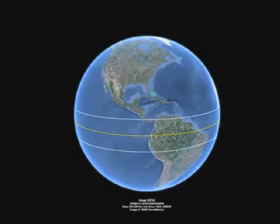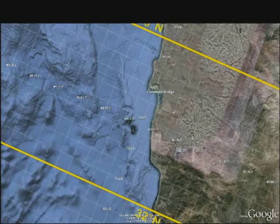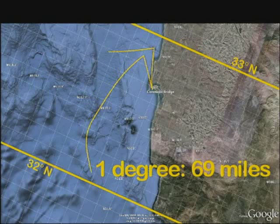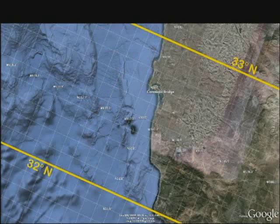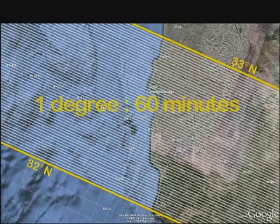Latitude. Lines of latitude, also known as parallels, circle the globe from east to west. These lines are all the same distance apart, about 69 miles. Each degree of latitude is separated into smaller pieces called minutes. There are 60 minutes in one degree.